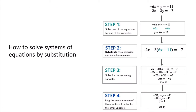Here's a flowchart showing how to solve systems by substitution. The first step is to rearrange the first equation so it's solved for y. Then take 6x minus 11 and plug it into the second equation in place of y. Distribute the negative 3, combine like terms, and solve for x — which gives us x equals 2. Plug x equals 2 back into one of the original equations to solve for y, giving us y equals 1. The solution to the system is the ordered pair (2, 1).